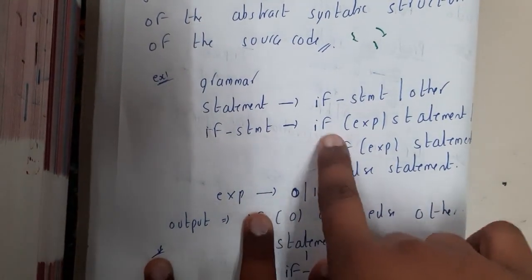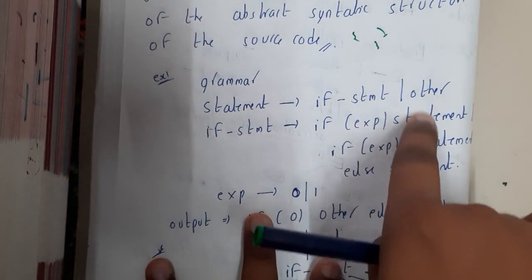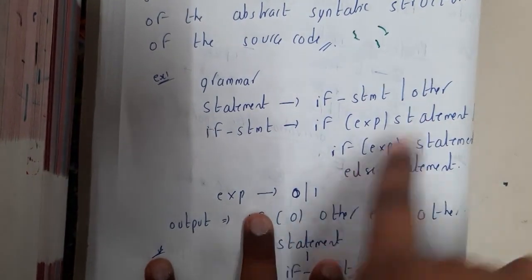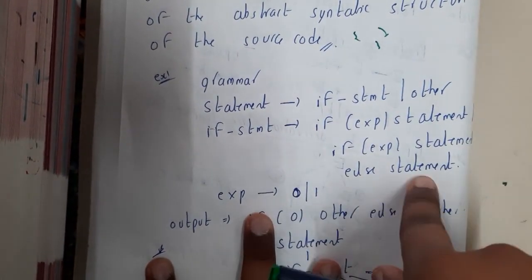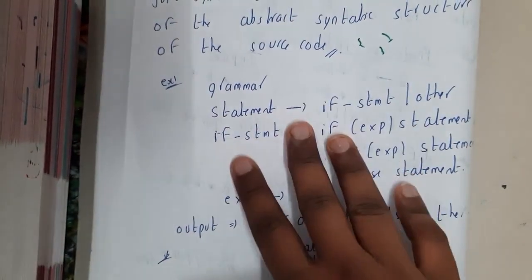If an expression is true, execute the statement, or there is one more option: if expression is true, execute, else execute another statement. In this way, this is nothing but the program, right?